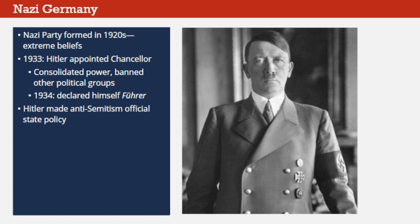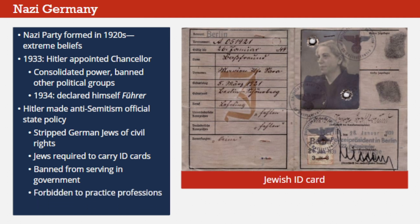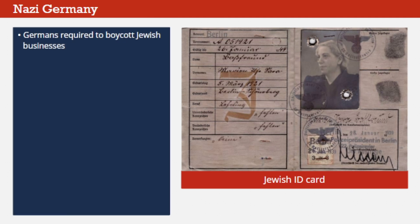As he gained power, Hitler moved quickly to strip German Jews of their civil rights and their equal treatment in society. Jews were required to carry identification cards at all times, with the special identifying mark—a large J—stamped on them. They were banned from serving in government positions, and those already employed lost their jobs. Soon, Jews would be forbidden to practice professions such as law and medicine. And to prove their loyalty to the reigning Nazi Party, Germans were required to boycott Jewish-owned German stores and businesses.